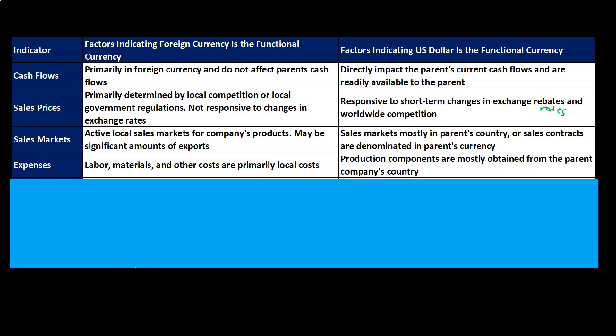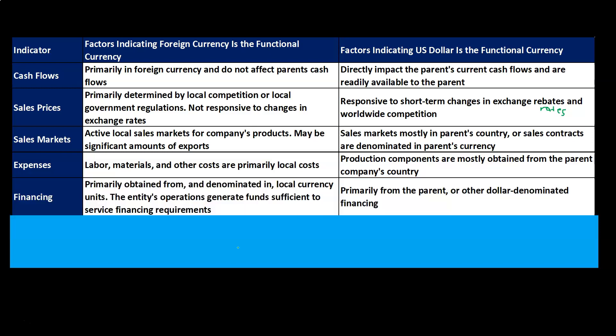For the expenses indicator: factors indicating foreign currency is the functional currency include labor, material, and other costs that are primarily local costs — that would indicate the local currency is the functional currency. Factors indicating U.S. dollar include production components mostly obtained from the parent company's country. For the financing indicator: factors indicating foreign currency include financing primarily obtained from and denominated in local currency units, with the entity's operations generating funds sufficient to service its financing requirements. Factors indicating U.S. dollar include financing primarily from the parent or other dollar-denominated sources.